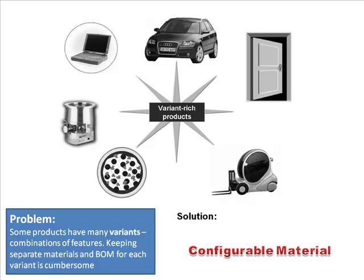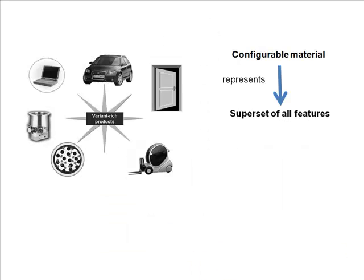The solution is what SAP calls a configurable material. So you'll have this material, but it's configurable. A configurable material represents the superset of all allowable features. If you took that car, it will have a superset of all possible variations - so that car will have both leather seats and cloth seats, all possible combinations.